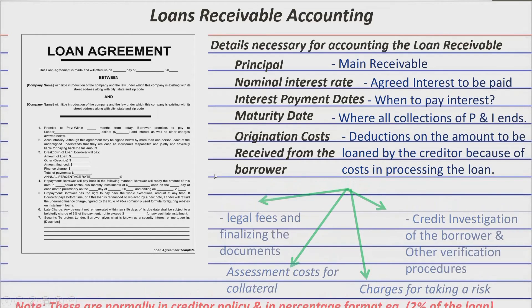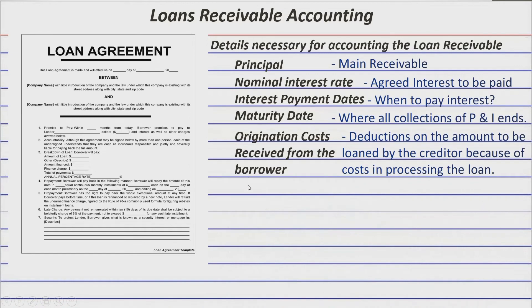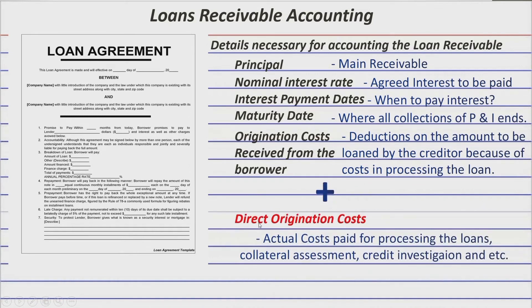Number one is the direct origination costs that you incurred as the lender or creditor. It's not normally found in the loan agreement because these are the actual legal fees you paid, or costs of credit or collateral investigation, or investigation of your client or borrower. Those costs are normally not disclosed to the borrower, so they're not in the loan agreement. And normally, this amount is actually lower than the origination fees received from the borrower.